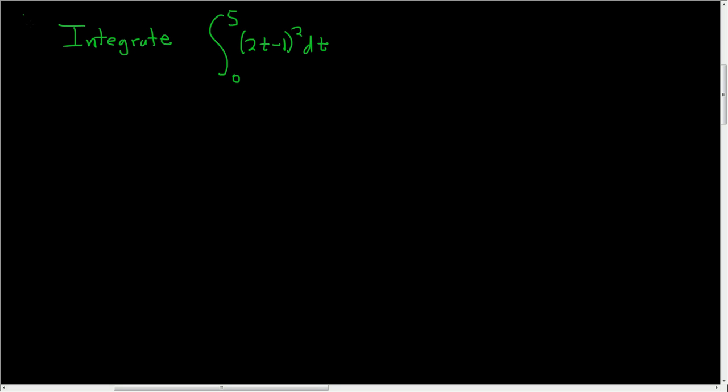Integrate 2t minus 1 quantity squared from 0 to 5. Let's go ahead and do this really quickly. So, solution.